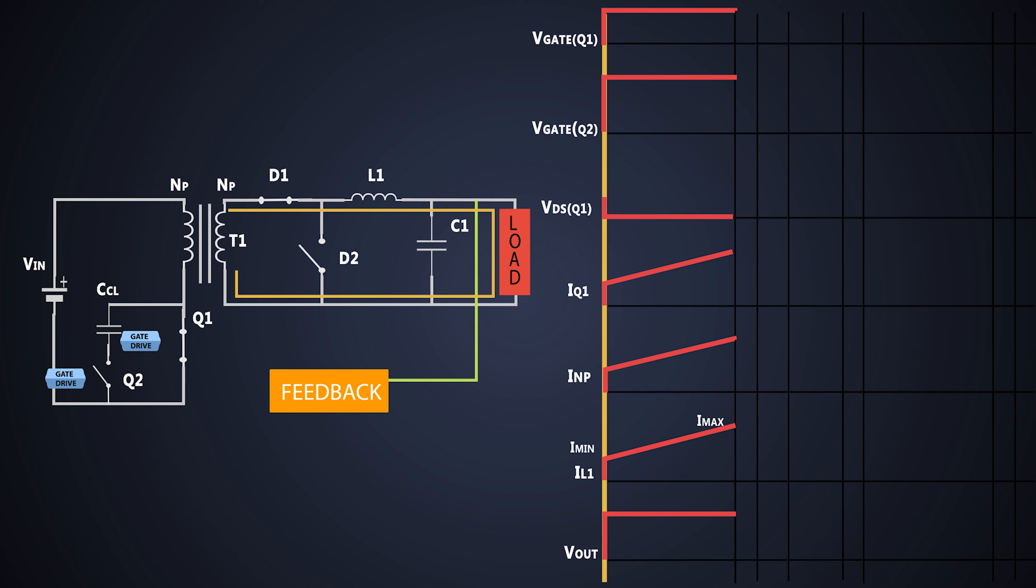Now when the MOSFET Q1 is turned OFF, in this case there are a lot of changes going in this primary circuit. So we will break each part sequentially and understand. But the secondary circuit behaves normally, due to stored energy in the inductor L1, its polarity changes so the diode D2 gets forward biased. The current of the inductor starts decreasing as it gives the power to the output.